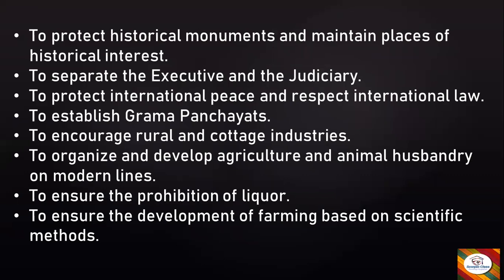To encourage rural and cottage industries; to organize and develop agriculture and animal husbandry on modern lines; to ensure the prohibition of liquor; to ensure the development of farming based on scientific methods. So these were some of the Directive Principles of State Policy.